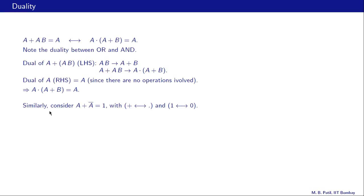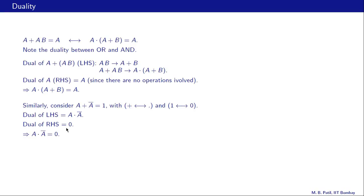Similarly, consider a plus ā equals 1. What is the dual of this theorem? Knowing that plus and dot are duals of each other, and 1 and 0 are also duals of each other: the dual of the left hand side replaces plus with dot, giving a·ā. The dual of the right hand side gives 0. Therefore we can write a·ā equals 0. Once we know this theorem we can obtain the dual simply by the principle of duality without proving it again.